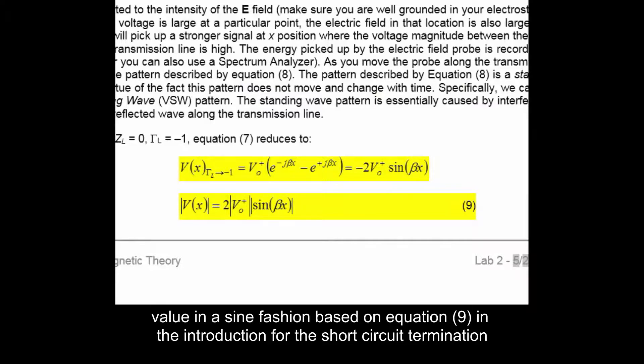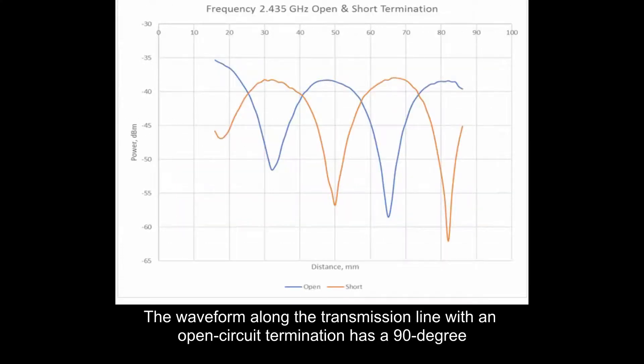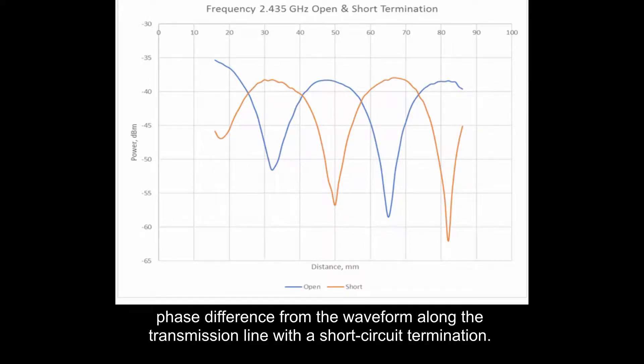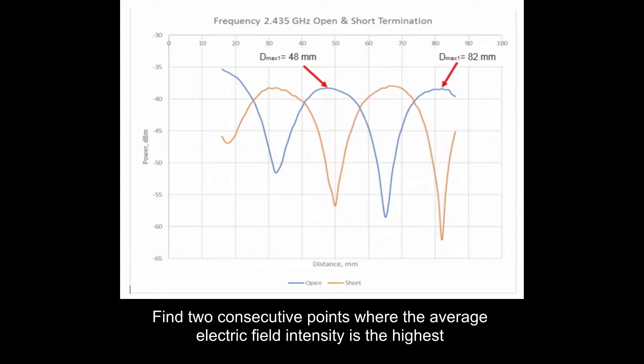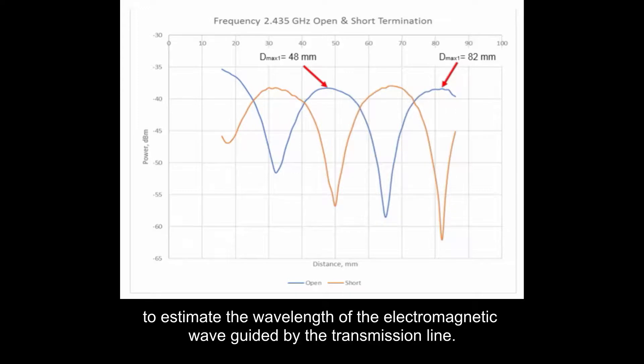The waveform along the transmission line with an open circuit termination has a 90 degree phase difference from the waveform along the transmission line with a short circuit termination. Find two consecutive points where the average electric field intensity is the highest to estimate the wavelength of the electromagnetic wave guided by the transmission line.